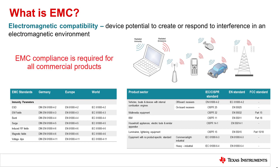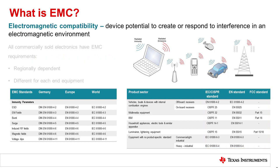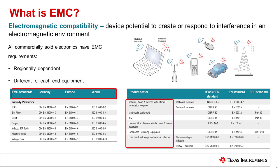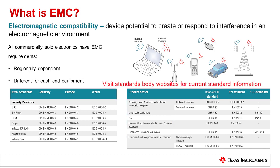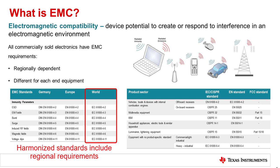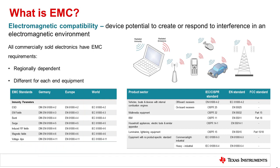If you are designing a system intended for commercial purposes, there are specific EMC requirements that will need to be met. The FCC and IEC regulatory organizations are some of the most commonly known standards bodies for regulating EMC requirements. It's important to note that there are different standards requirements for each end equipment and for each region, so take the time upfront to understand the EMC regulations your design will need to meet. You can determine the required standards by visiting regional standards body websites or referring to the relevant international and equipment standards. IEC standards are international standards and are considered harmonized standards in that they typically include regional requirements.